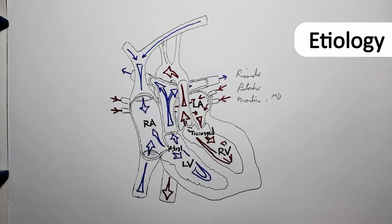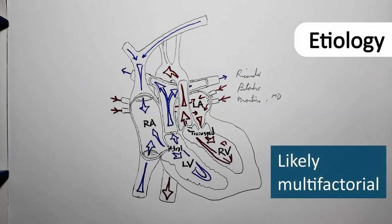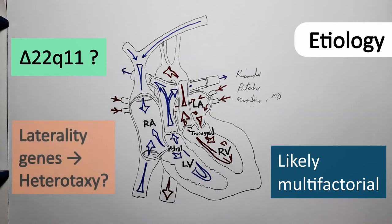The disease etiology is poorly understood. There is a suspicion that it's multifactorial, and that, like other congenital heart diseases, it may have an association with the deletion of chromosome band 22q11. It's also possible it could be associated with heterotaxy — a disease where internal organs are not arranged correctly — and thus be associated with laterality gene defects.